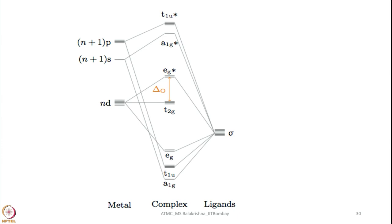For example, in this case what we are considering for any given transition metal: nd orbitals, and (n+1)s and (n+1)p orbitals are considered as valence orbitals, and the intention is to utilize them for making bonds when the ligands enter the coordination sphere. Here we are considering atomic orbitals of the metal — these 5 d orbitals, the (n+1)s orbital, and the (n+1)p orbitals with Mulliken symbol t1u — and here we are considering ligand group orbitals. There are 6 ligand group orbitals, each one coming with a pair of electrons.